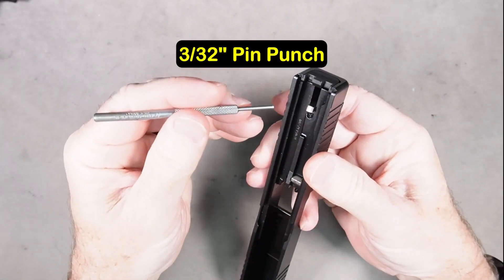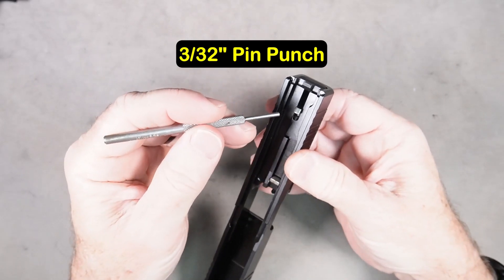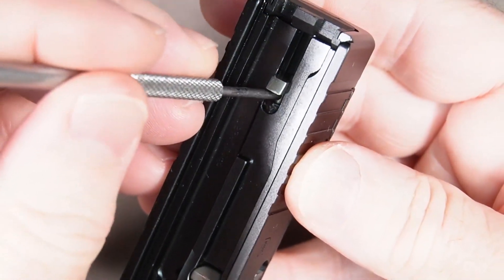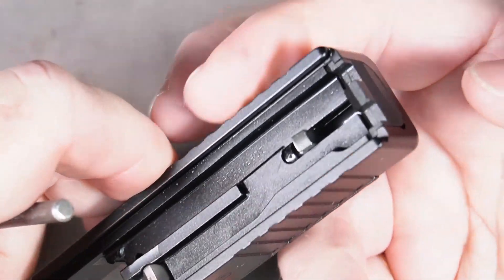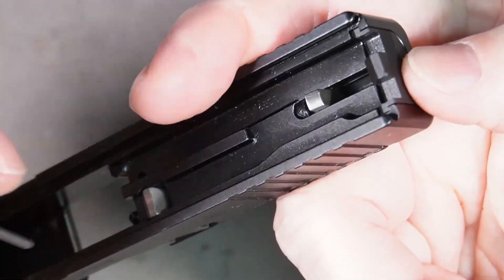So just take a small pin punch. This is a 3/32nds pin punch, and you want to go right in this slot here, and we want to press down on the spring. And at the same time we do that, we can slide this up with your thumb.